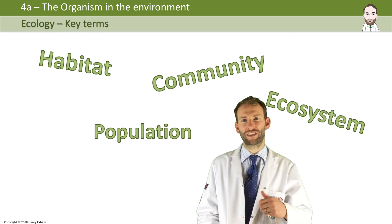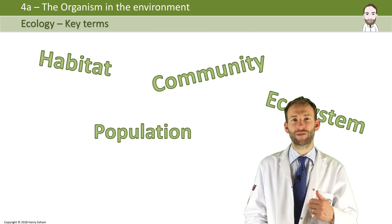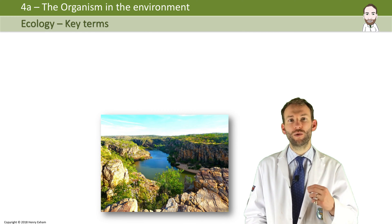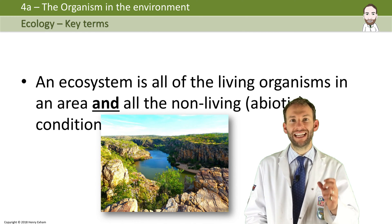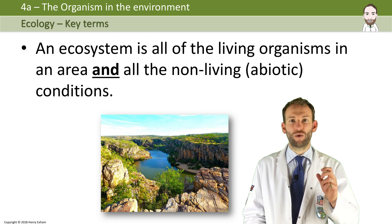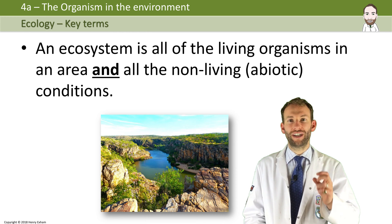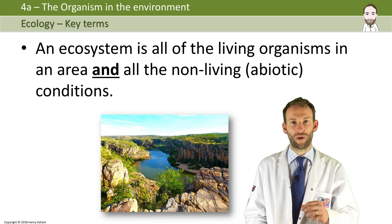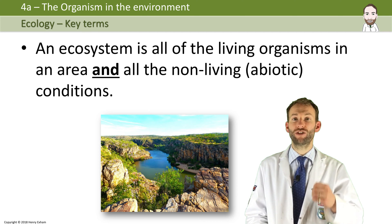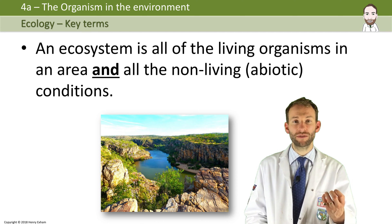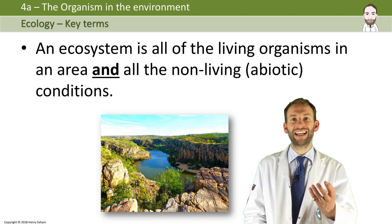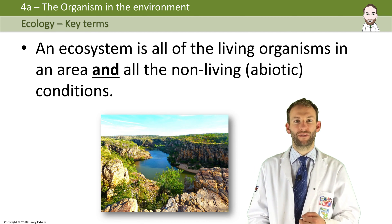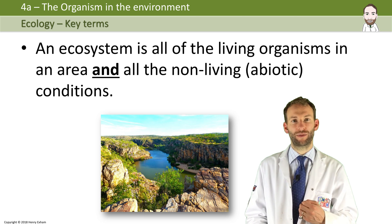So let's start off with ecosystem. What is an ecosystem? Well, an ecosystem is all of the living organisms in an area or habitat and all the non-living conditions as well — the physical environment. So it's a combination of the living organisms and the physical environment, or the abiotic factors as we call it.